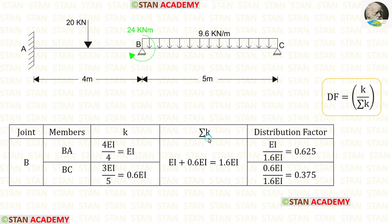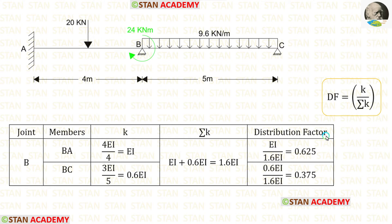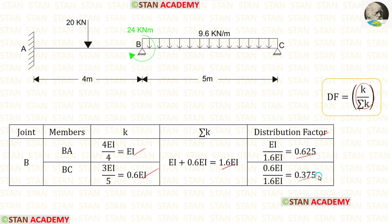Now let us find sigma K. Adding the two stiffness values EI and 0.6EI, we get sigma K equal to 1.6EI. Now let us find the distribution factor using the formula K upon sigma K. Using the calculated K and sigma K values we can obtain the distribution factors for BA and BC.